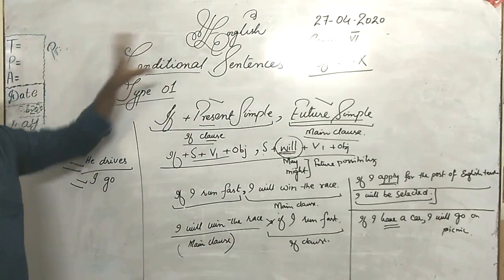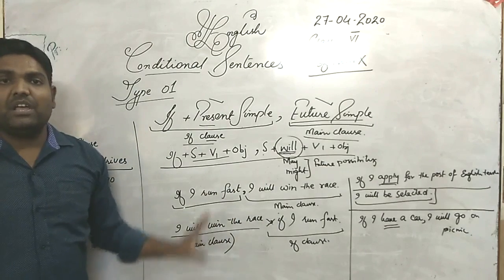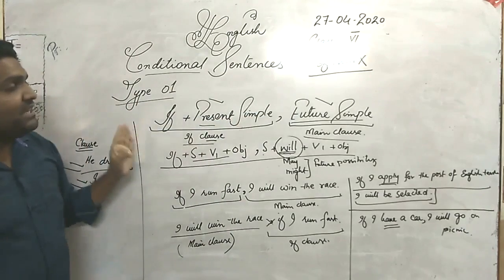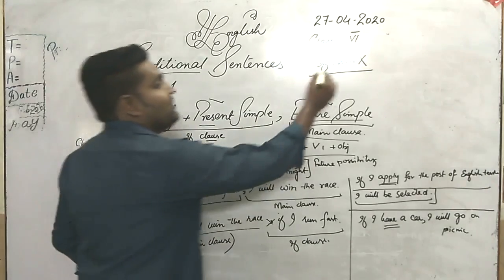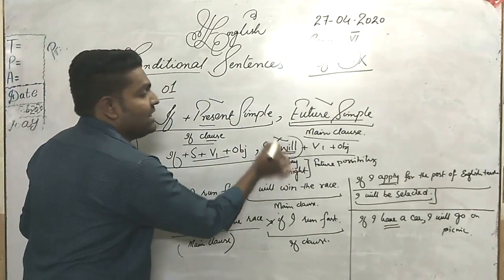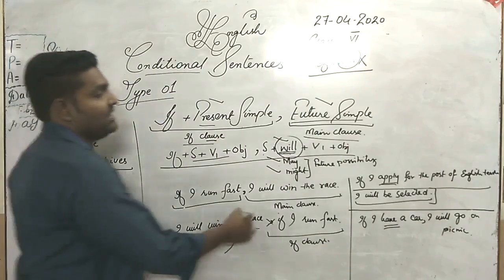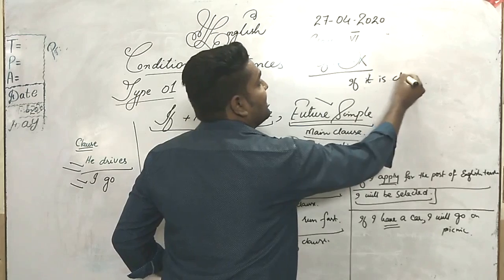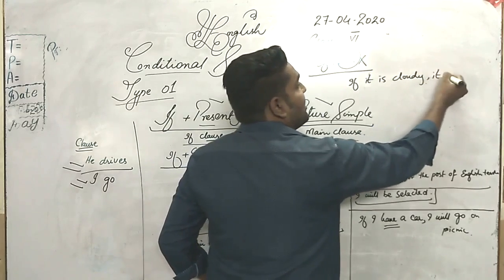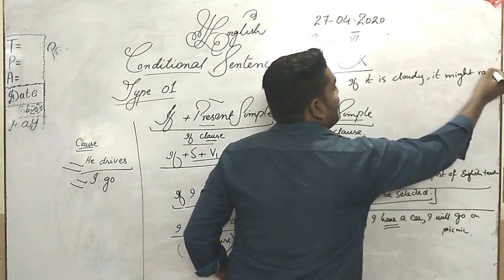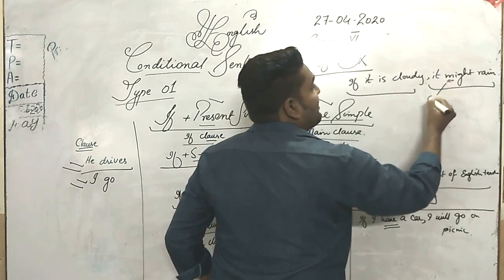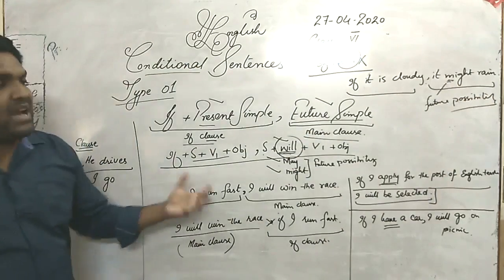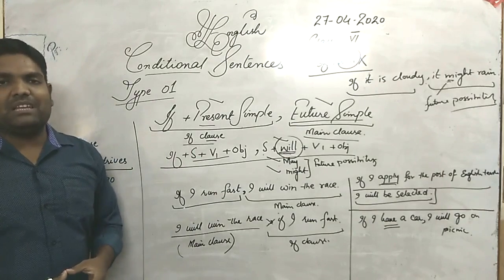This is conditional sentence type 1. If you want to ask any question regarding this lecture, you can. Remember: the if clause and main clause are the two parts of conditional type 1. We do not use 'will' with 'if.' We can use 'will,' 'may,' or 'might.' For example: 'If it is cloudy, it might rain.' This sentence is about future possibility, so you can use 'may,' 'might,' or 'will.' Thank you very much.